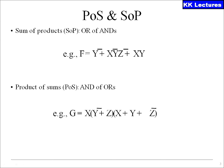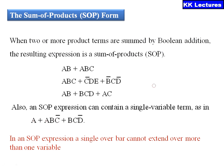The sum of products: when two or more product terms are summed by Boolean addition, the resulting expression is the sum of products. For example, AB plus ABC, or ABC plus C̄DE plus B̄CDE, or AB plus BCD plus AC — these are all examples of SOP form. An SOP expression can also contain a single variable term, as in A plus ABC̄ plus BCD̄.